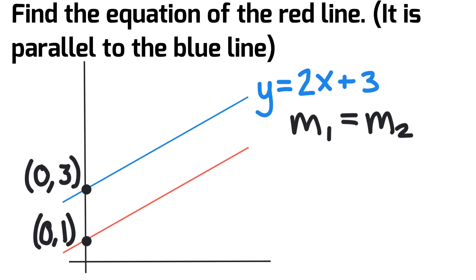When we look at these values for the blue line, for example, the equation tells us the slope is 2, so that has to be the value of m1. And since the lines are in parallel, that also has to be the value of m2. So the slopes of both lines are 2.